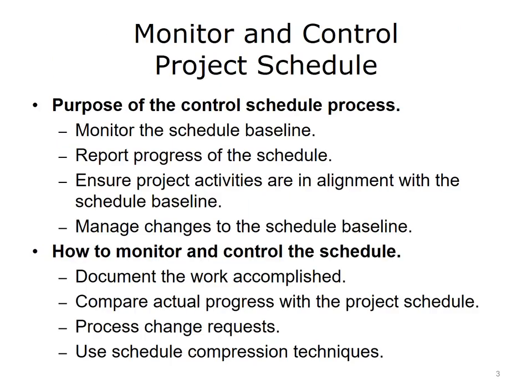One resource that you'll refer to again and again will be your project schedule. The control schedule process monitors the status of the project by determining if the project work has been accomplished and delivered as planned. The project manager measures, compares, and analyzes the actual performance reported by team members against the schedule baseline. If variances are detected and considered significant, you have to decide which corrective or preventive actions to take.